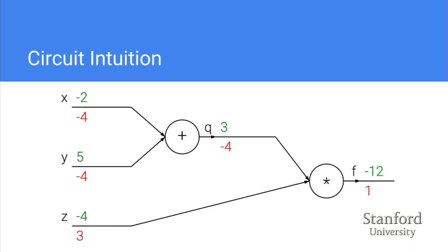In the circuit diagram example with f = (x+y)*z where x=-2, y=5, z=-4: we start with error value 1 at f. The error at the q node is -4 because df/dq equals z = -4. The local gradient dq/dx is 1, so the total gradient at x is -4 * 1 = -4. This illustrates how the error signal flowing into a node is multiplied by the local gradient to give the total gradient.